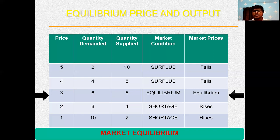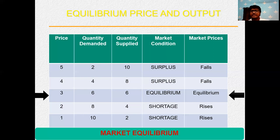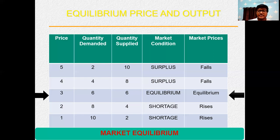Equilibrium means whenever demand equals supply. At three rupees price, my demand is six units and my supply is also six units. Whenever demand and supply are both equal at three rupees, that situation is called the equilibrium situation in the market.